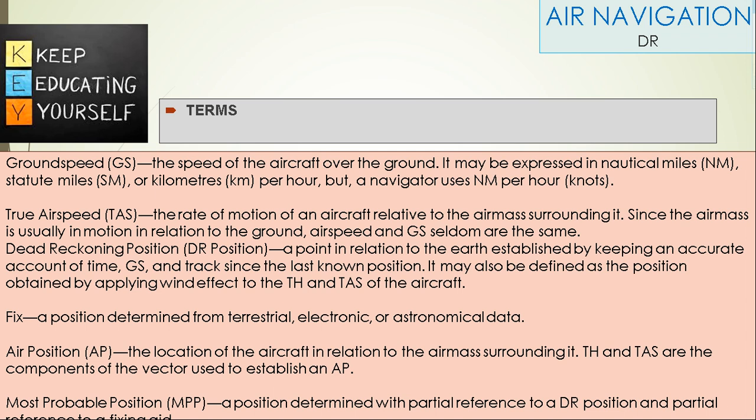DR Position: A point in relation to the earth established by keeping an accurate account of time, ground speed, and track since the last known position. It may also be defined as the position obtained by applying wind effect to the true heading and true air speed of the aircraft.